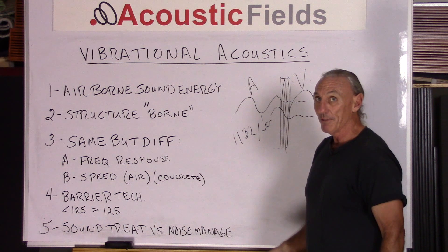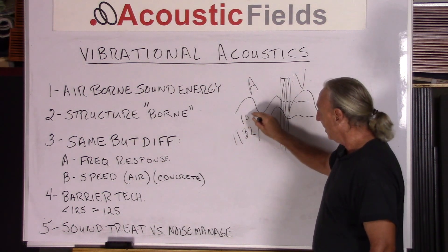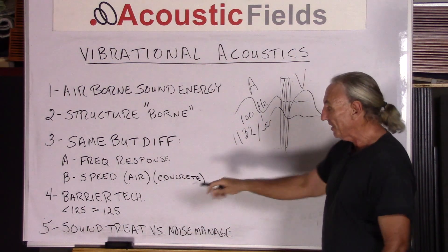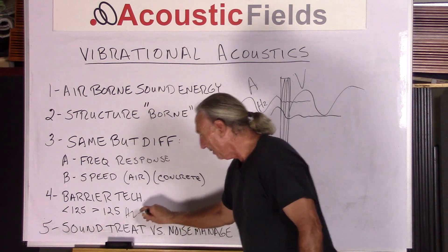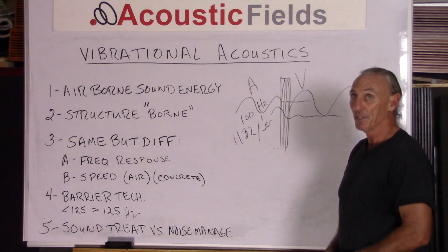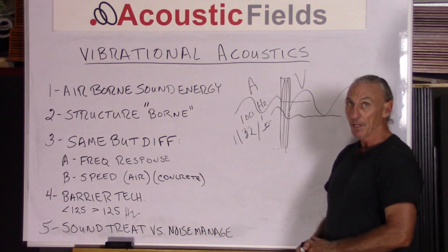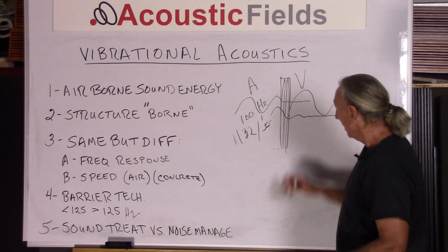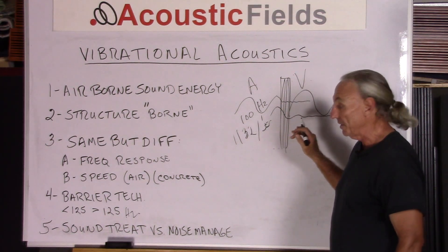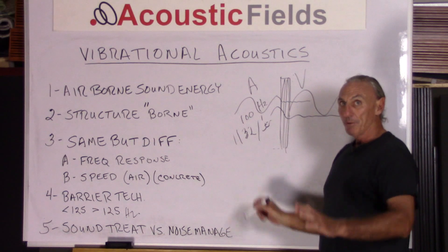We have a break point of about 125 cycles. The technology requirements to stop energy below 125 cycles — say 100 Hz coming in — is vastly different than for energy above 125 cycles. It's about three times the cost, three times the weight, and requires much more complex installation methodology. That's why we do tests to find out the strength and frequency of the noise we're dealing with, defining what frequencies we're trying to stop and at what amplitude, so we know how much barrier technology to incorporate and how to build it using layering techniques.